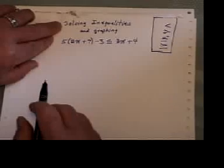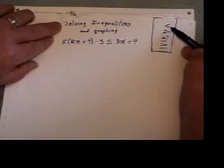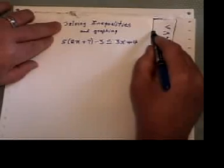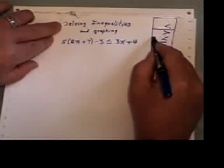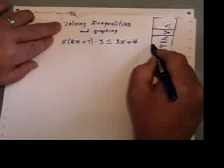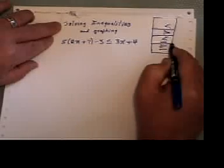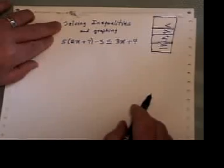Okay, what we're going to look at here is solving inequalities and graphing. An inequality is something that has one of these four signs in between there: it could have a less than sign, it could have a greater than sign, or a less than or equal to, or a greater than or equal to.